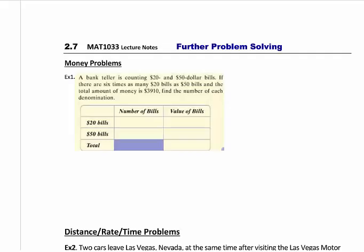Today we're going to talk about 2.7, which is lectures on further problem solving, which essentially means we're doing some more word problems. You're going to have two types of word problems in this section: money type problems and distance rate time problems. Please expect one of both on the actual test.